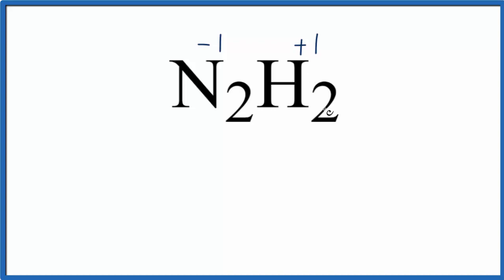You could also do it algebraically. You could say everything's going to equal zero, and if we don't know nitrogen, we could just call it X. In fact, there's two of them. Let's call it 2X. Plus hydrogen is a plus one, and we have two of them.